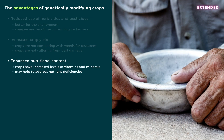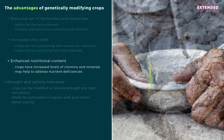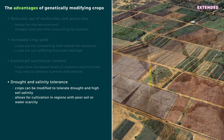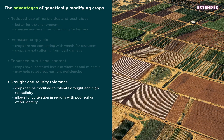Enhanced nutritional content: modified crops that increase the uptake of vitamins, minerals and proteins may help to address nutrient deficiencies. Drought and salinity tolerance: crops can be modified to tolerate drought and high soil salinity, which allows for cultivation in regions with poor soil or water scarcity.